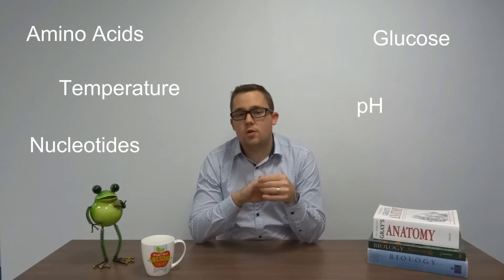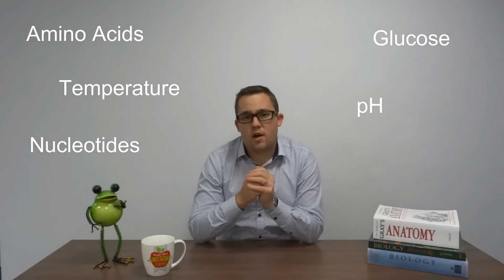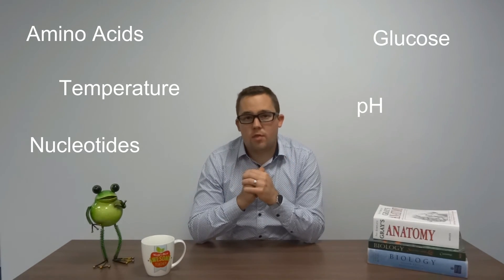There's a whole host of other things you could pick. You could say that it needs growth factors because it needs to go through the cell cycle. You could say that it needs a correct matrix to bind to. You could say it needs antibiotics so that it doesn't get infected. But those five—glucose, amino acids, correct temperature, correct pH, and nucleotides—I think are the easiest five to remember and you shouldn't need to know any more than that.